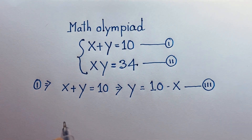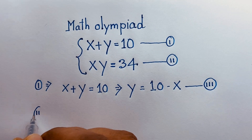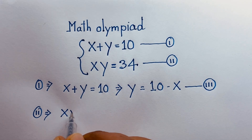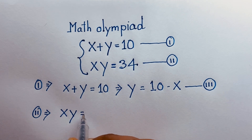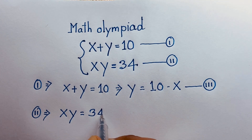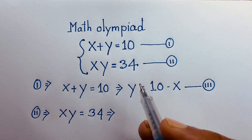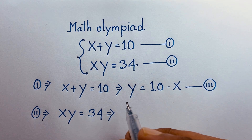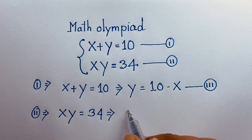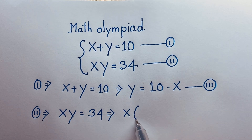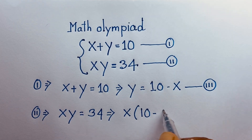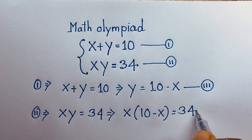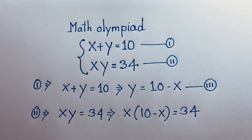Now I take our second equation, which is xy is equal to 34. Remember that y is equal to 10 minus x, so I put this value here. It will be x times (10 minus x) is equal to 34.